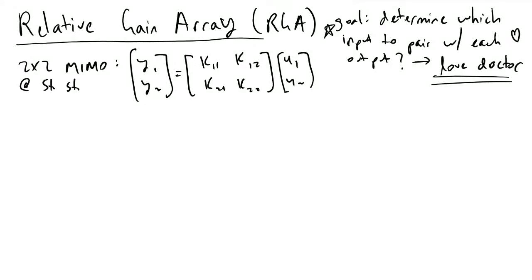Relative Gain Array, or RGA, is the method that process engineers will use to determine how to pair which input with which output. I look at it as you are now the love doctor and it's your job to figure out what's the best relationship to have in your design of your control system. It is very important to understand how to do this because you get instability in your system if you get it wrong.